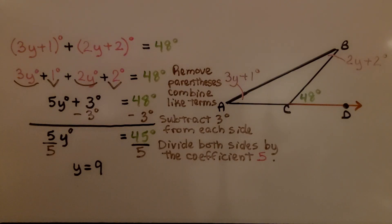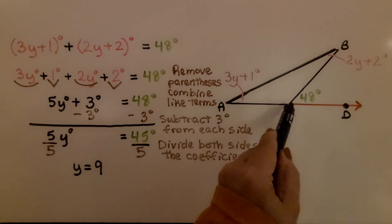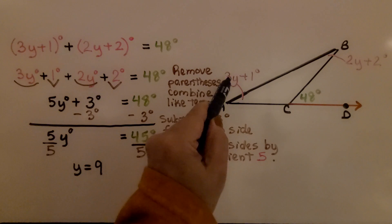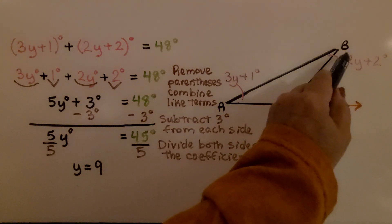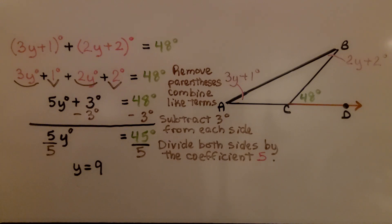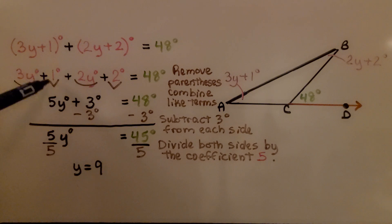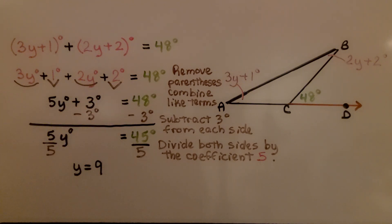Let's take a look at this diagram. We have an exterior angle measure of 48 degrees, an extension, and a triangle. The measure of angle A is 3y plus 1 degree, and the measure of angle B is 2y plus 2 degrees. We remove the parentheses and combine like terms: 3y and 2y give us 5y, and 1 degree and 2 degrees give us 3 degrees.